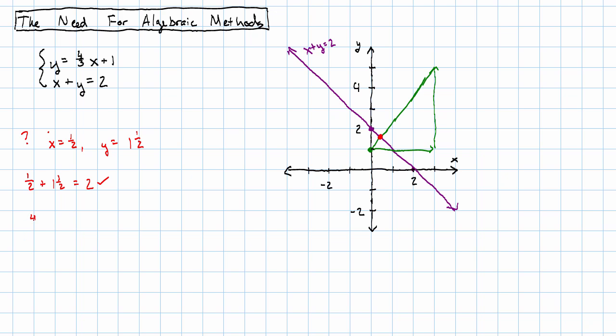But, four-thirds times a half plus one is one and two-thirds, not one and a half. So, that's not our solution.